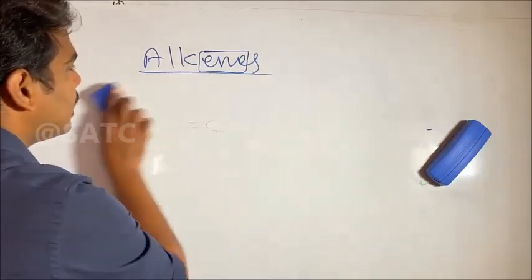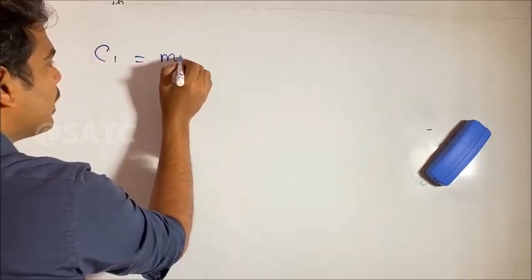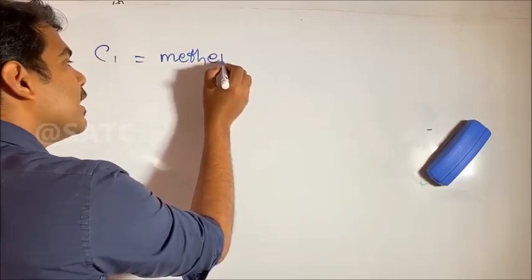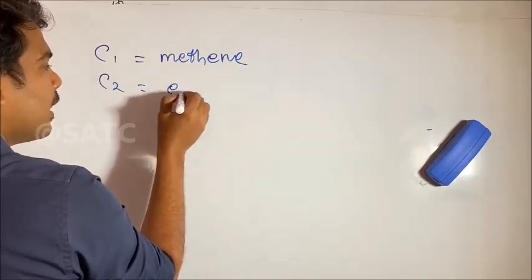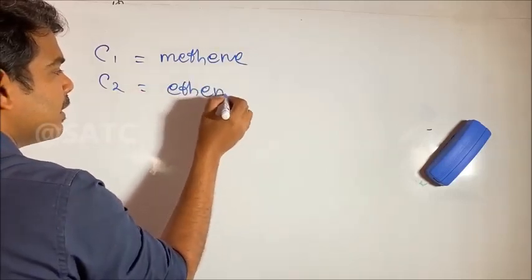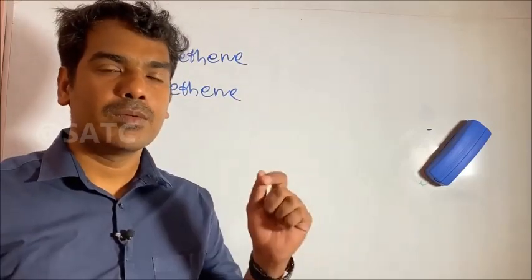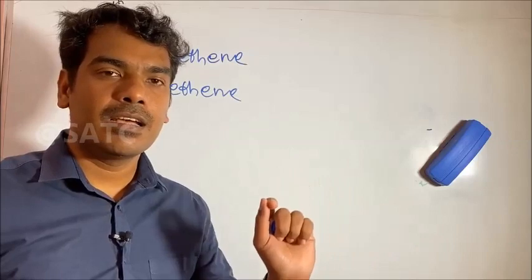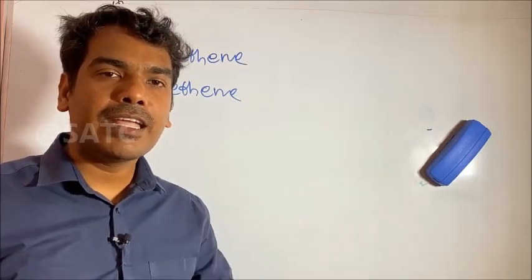Let's take the first one of the alkenes. The first one is Meth, so we use methene. When there are two carbons with a double bond, the suffix is -ene. That's why we have ethene, propene, butene, pentene, hexene, heptene, octene, nonane, decene.